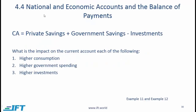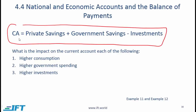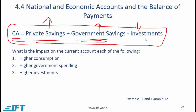Section 4.4 deals with national economic accounts and the balance of payments. The basic relationship you need to understand is that the current account equals private savings plus government savings minus investments. If private savings are high, government savings are high, and investments are low, there will be a large current account surplus. On the other hand, if savings are low and investments are high, there will be a current account deficit.